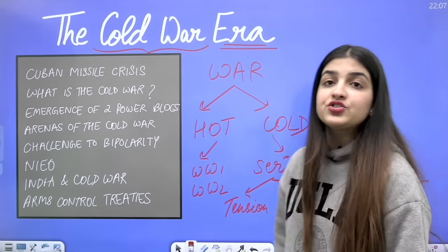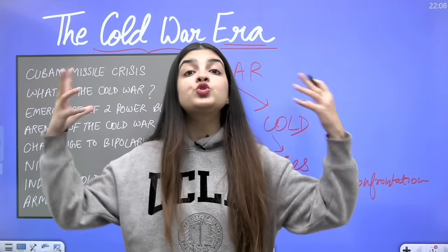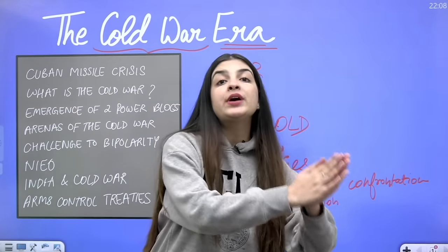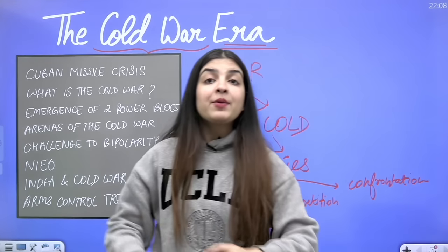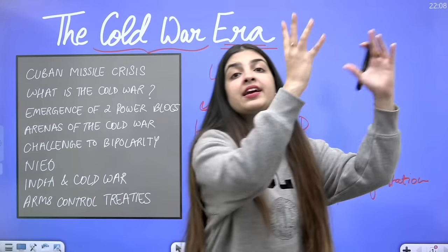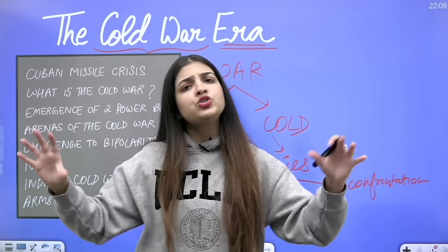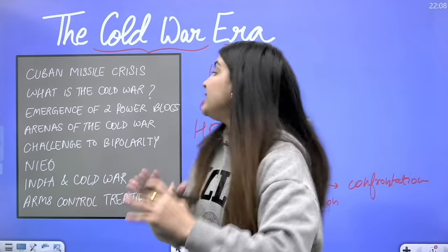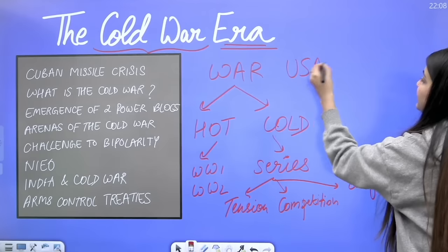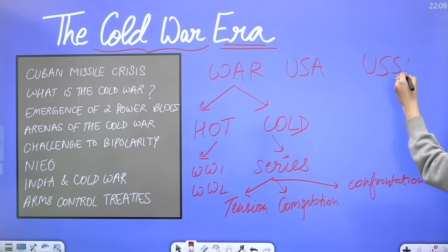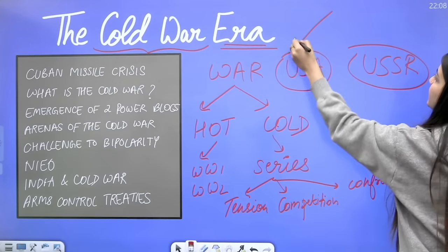A Cold War is a series of tensions, competitions, and confrontations between not just two individuals but between two superpowers — USA and USSR — backed by their allies. Just like in a fight between two friend groups, both groups get involved. Similarly, USA and USSR are the two superpowers with their respective ally groups.